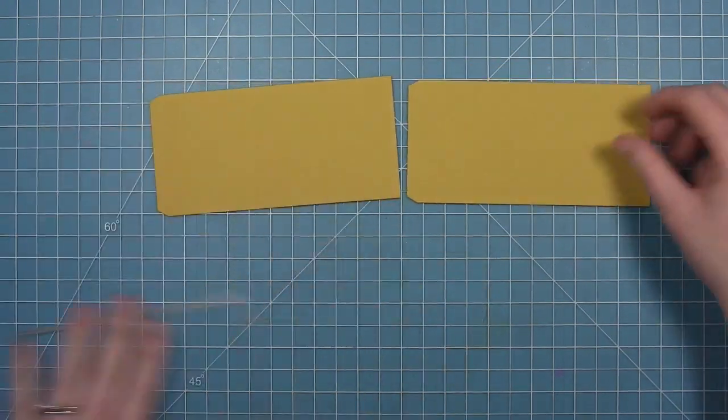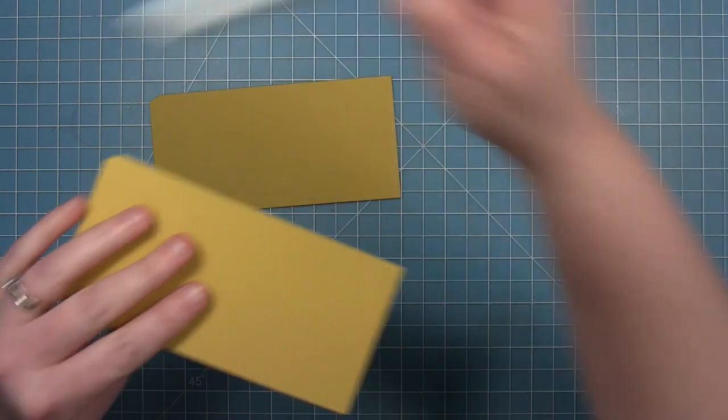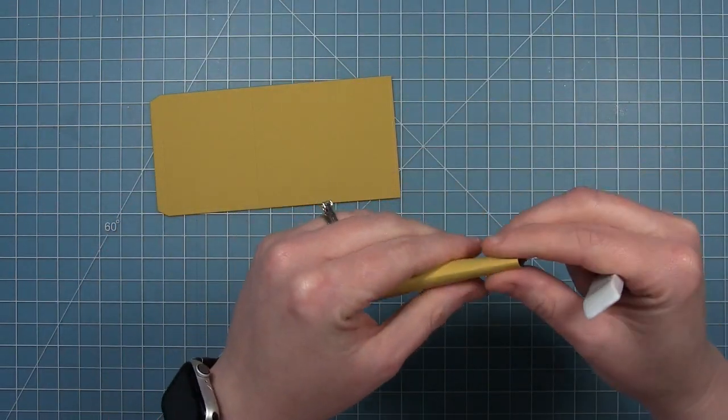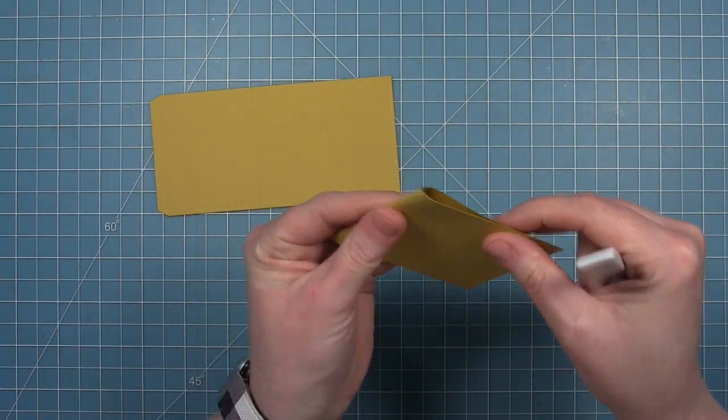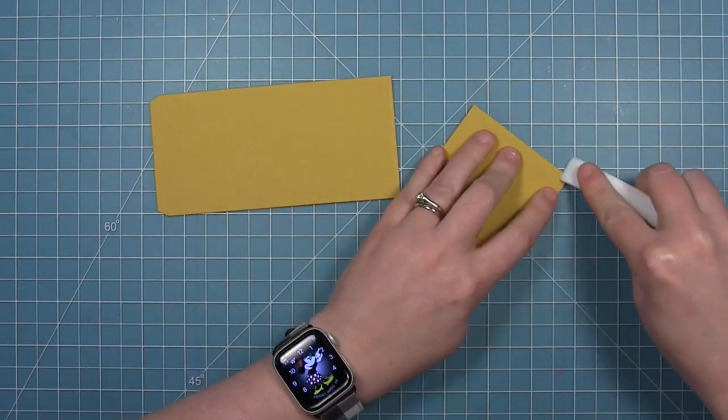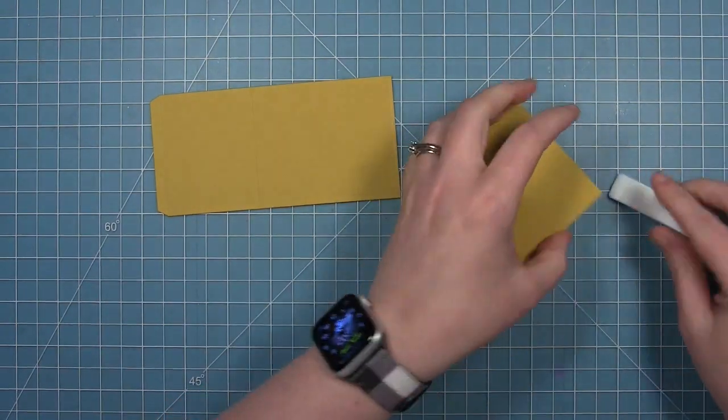So I've cut two pieces of the shadow box from some number two pencil cardstock. Now I'm just going to fold those score lines and use my bone folder to make sure that they're nice and creased.